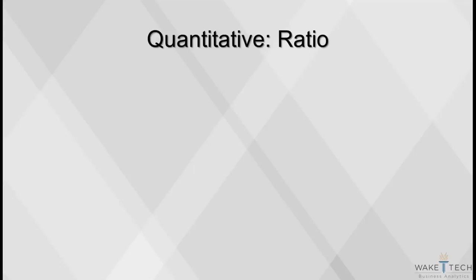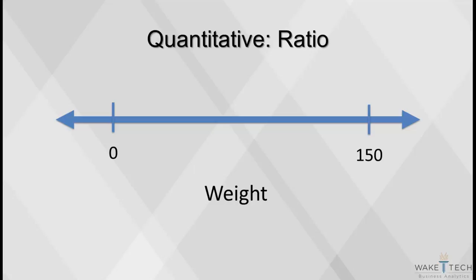Ratio variables are interval variables, but with the added condition that zero of the measurement indicates that there is none of that variable. True ratios exist when the same variable is measured on two different members of the population. For example, consider the weight of an individual. It makes sense to say that a 150-pound adult weighs twice as much as a 75-pound child.